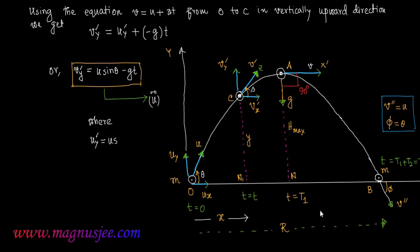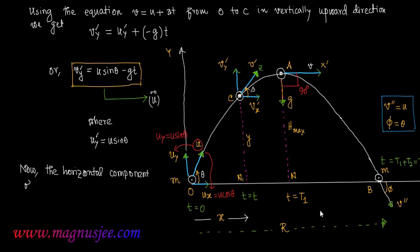The initial velocity u has two rectangular components: Uy equals u sin theta, which is the vertical component, and Ux equals u cos theta, which is the horizontal component of initial velocity of the projectile. The horizontal component of velocity of the projectile remains constant. So we can write Ux equals Vx prime.